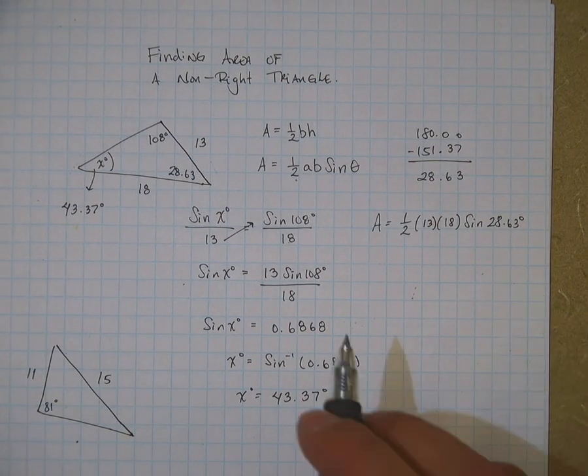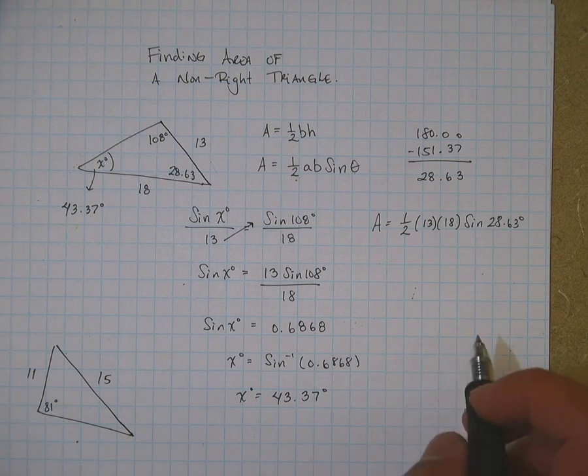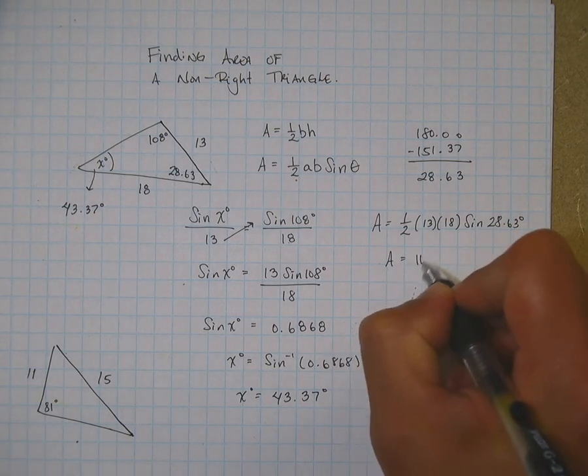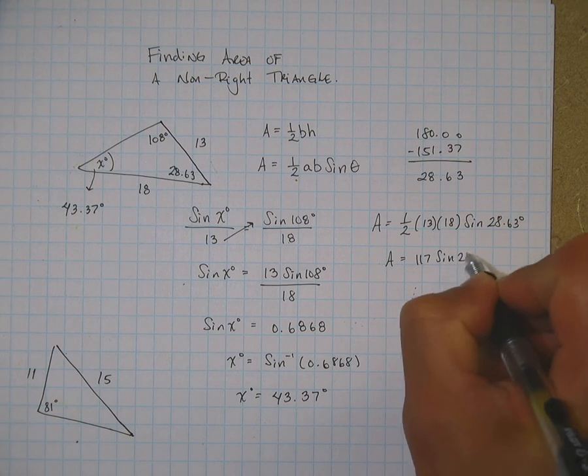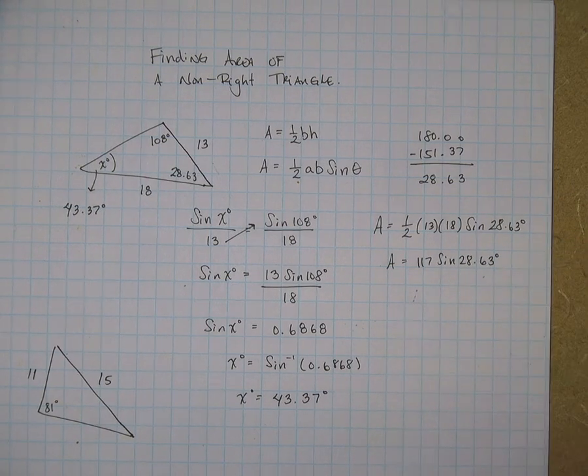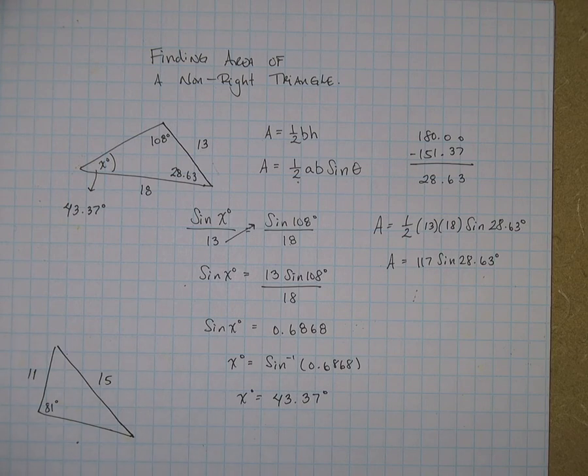Half of 18 is 9. 13 times 9 is 117. 117 sine of 28.63. And let me get my calculator. That should give you an area of 56.06 square units.